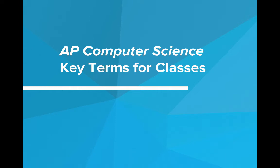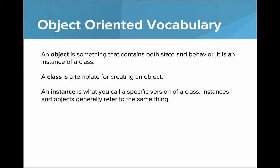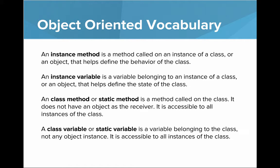Hi, in this video we're going to talk about some more key terms for classes. Let's review some object-oriented vocabulary we've been using in this unit. First, an object is something that contains both state and behavior. It's an instance of a class. A class is a template for creating an object. An instance is what you call a specific version of the class. Instances and objects generally refer to the same thing.